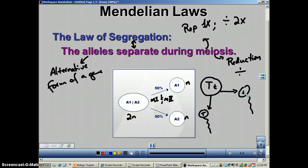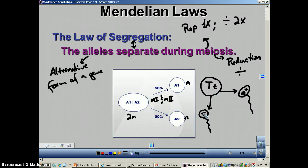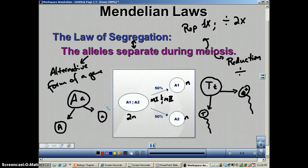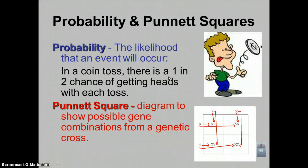Half are going to get a little T, the other half are going to get big T. That's all the law of segregation is — half the alleles go to some gametes, and the other half go to the other gametes. We've also got big A and small A, and in this case we're going to make egg cells. Half of the egg cells are going to get a big A, and the other half are going to get a little A.